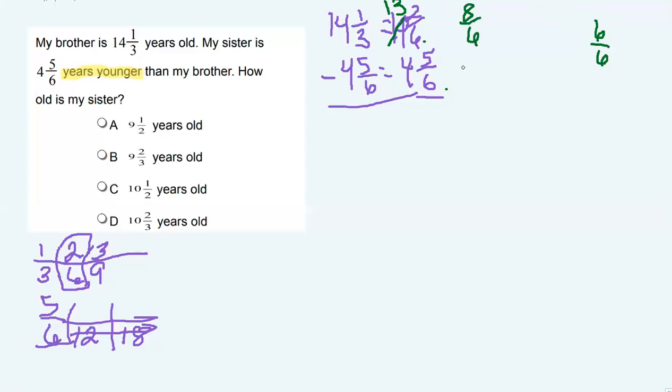Okay so now I will be able to move forward with my subtraction. Eight minus five is three. My denominator stays the same which is six and then I have to subtract 13 minus four. Okay now I know that eight plus four is twelve so nine plus four must be thirteen.